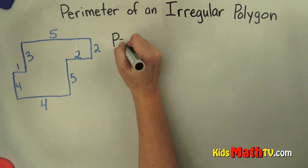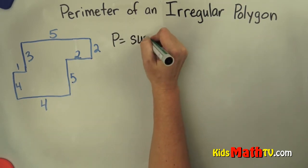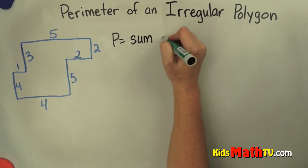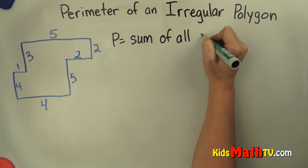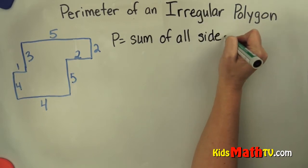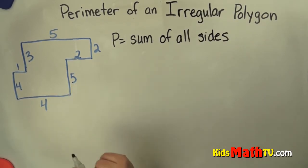And that will give us the perimeter. So the perimeter equals the sum, or adding them all up, sum of all sides. So we're going to add all of the sides together.